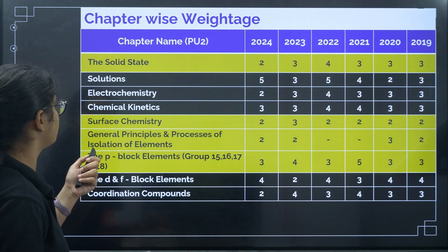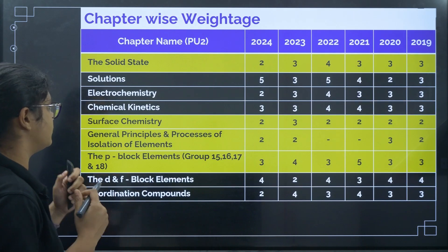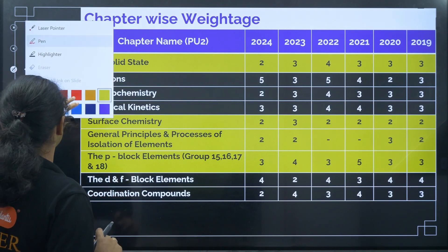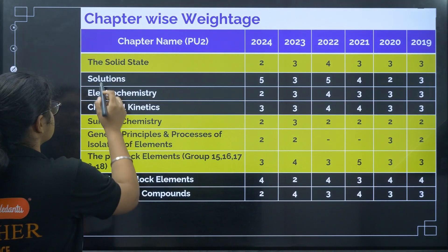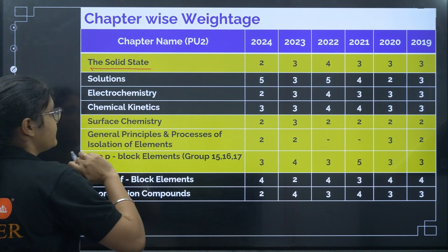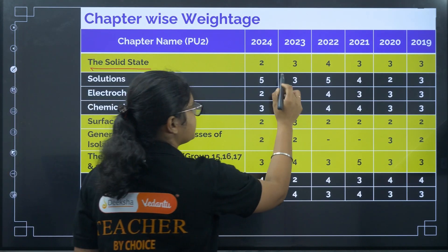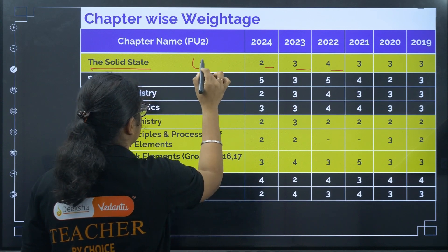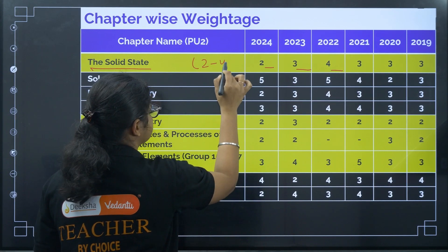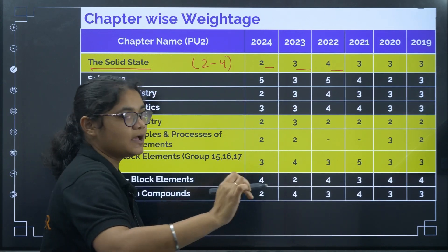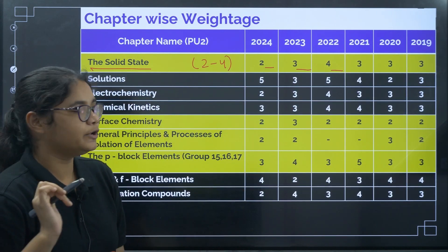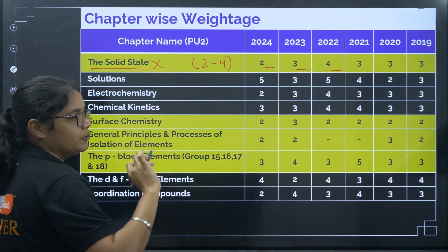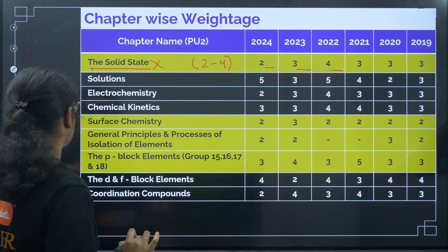Coming to PU2 — the first chapter, Solid State, has very high weightage with two to four questions expected. But again, good news: this chapter is deleted from your syllabus. You might wonder why two questions were asked in 2024 — yes, they were asked, but those two questions were discarded and not evaluated.